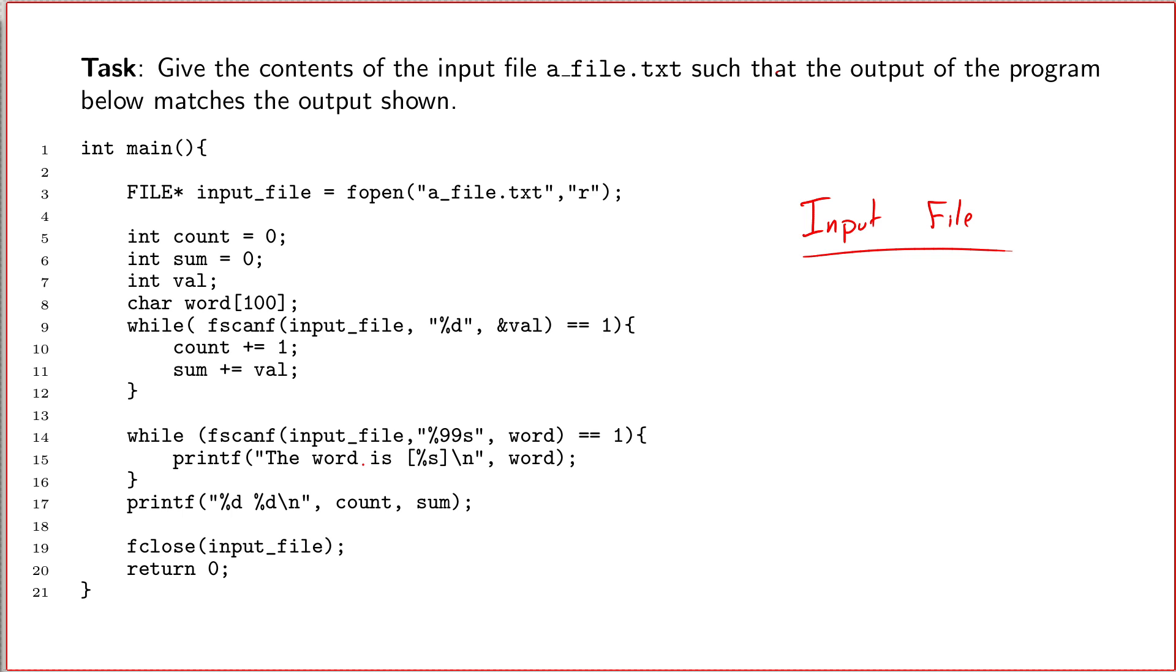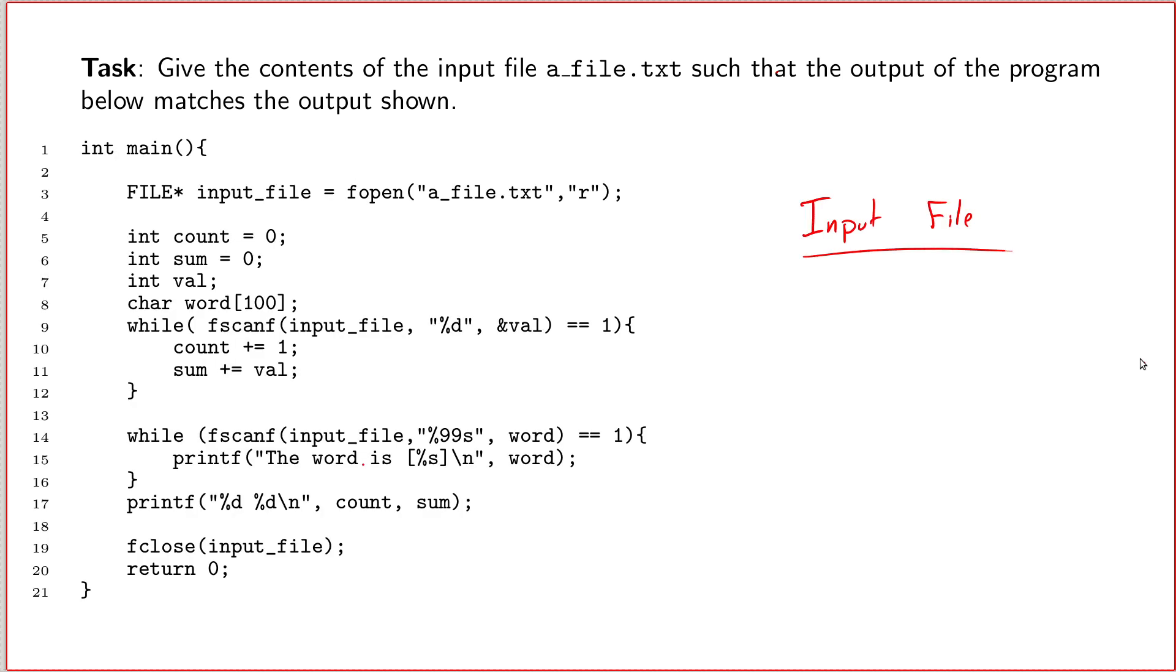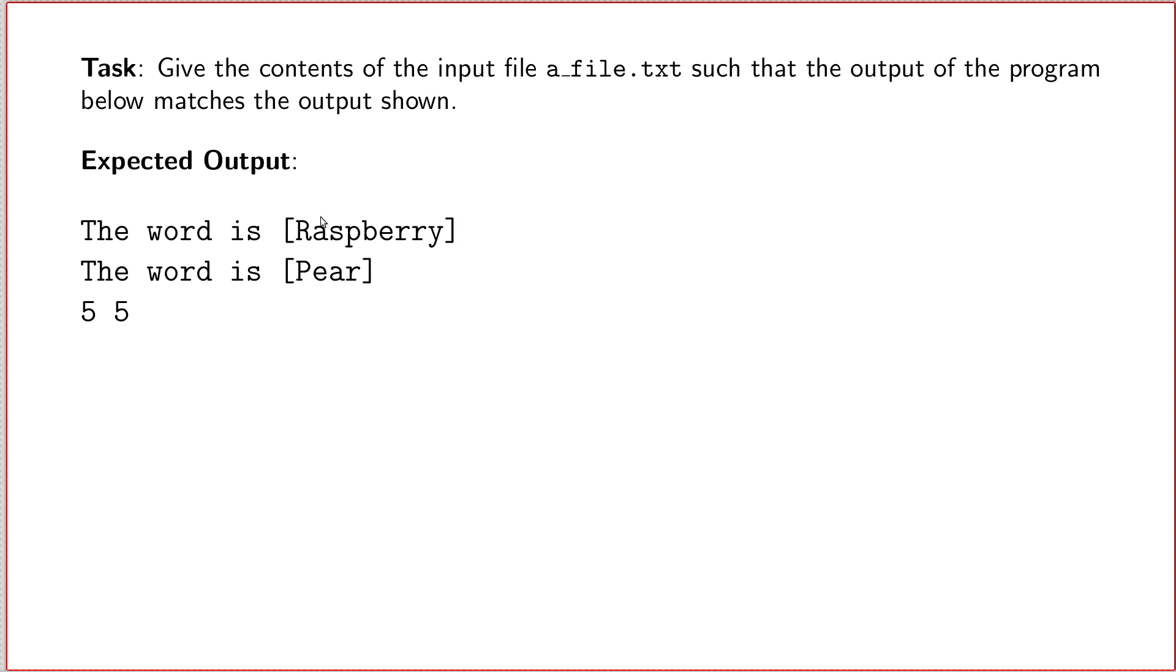So this is a unique style of tracing question that shows up when we cover files. In this question you're given a set of code, a complete program, and you're given the output of the program, and your job is to figure out what the input file contains. The one piece of information you aren't given is the contents of this input file. You are told the file does exist, and the program runs and generates this output, and you've got to figure out what was in that file.